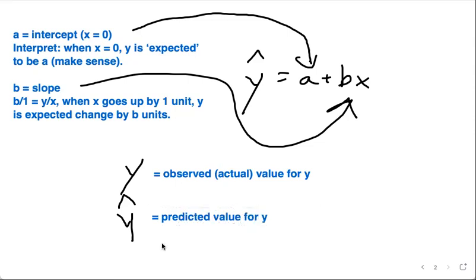And so what actually happens versus what's predicted, the difference between that is actually called residual. The letter for residual is going to be e, which is equal to y minus y hat. Or you might just see it as residual equals observed y minus predicted y.